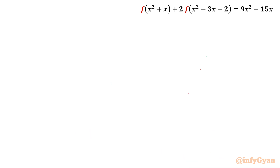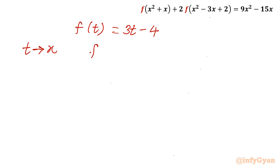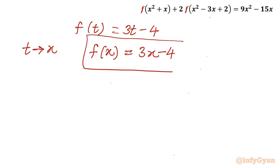Switching the variable from t back to x, we get f(x) = 3x minus 4. This is our required function f(x). I hope this video will be meaningful to you. Do not forget to like, share and subscribe. Bye-bye till next video. Good luck and take care.